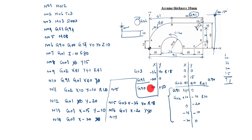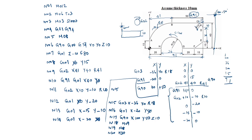This is G90. After that we will take the tool outside: G90, X100, Y50. N18: M09. N19: M08 — M09 is coolant off, M08 is spindle off. N20: M30, end of the program. Thanks for watching this video.